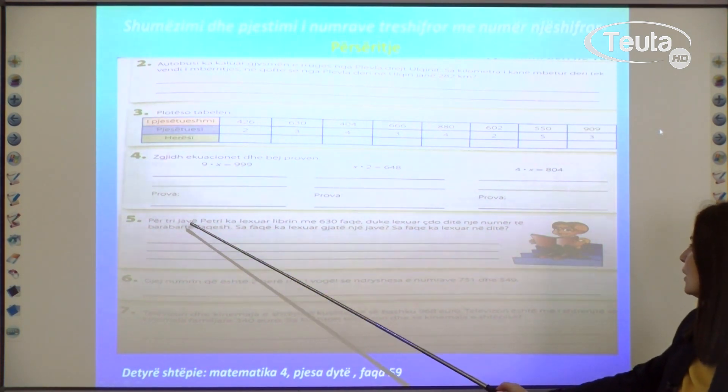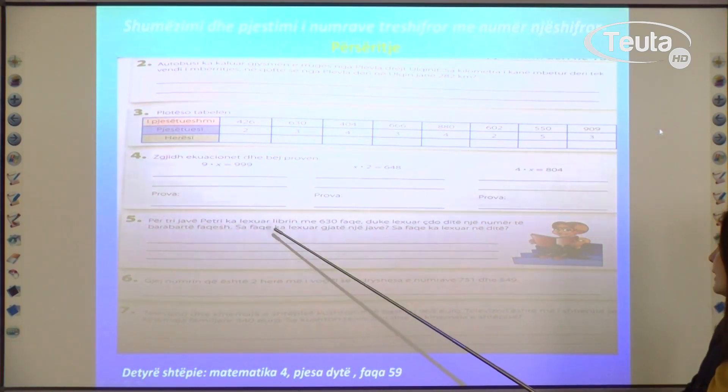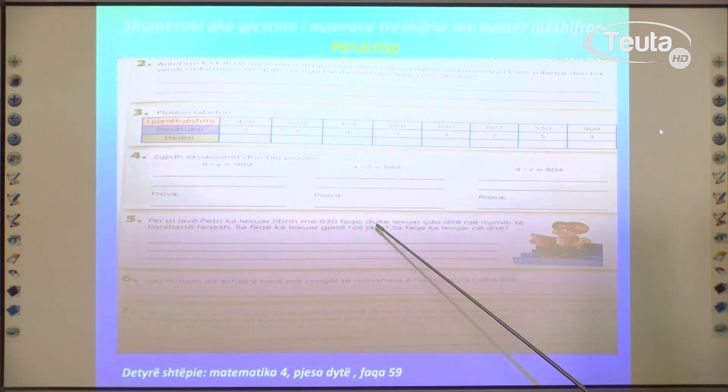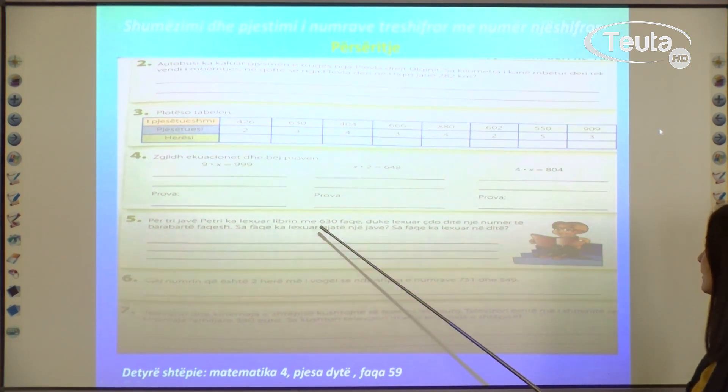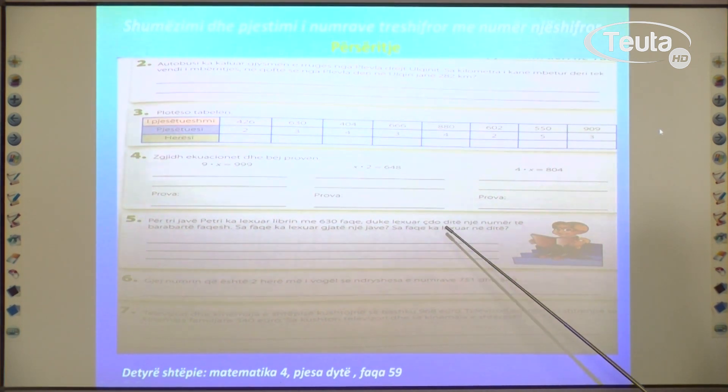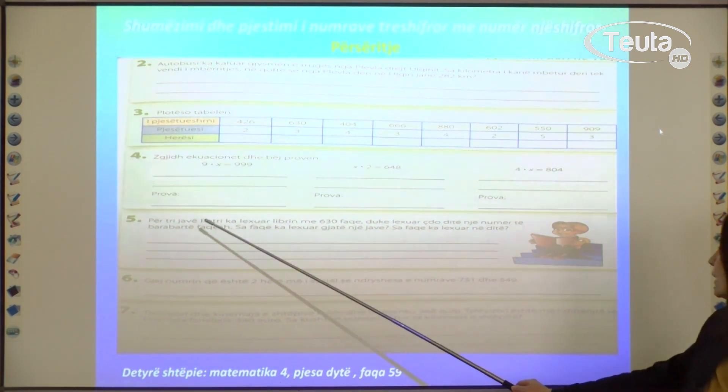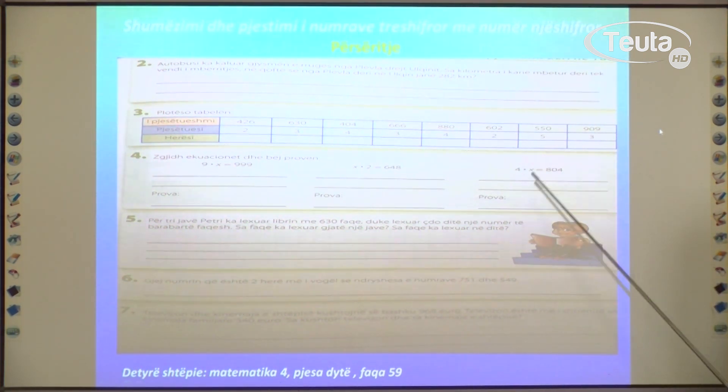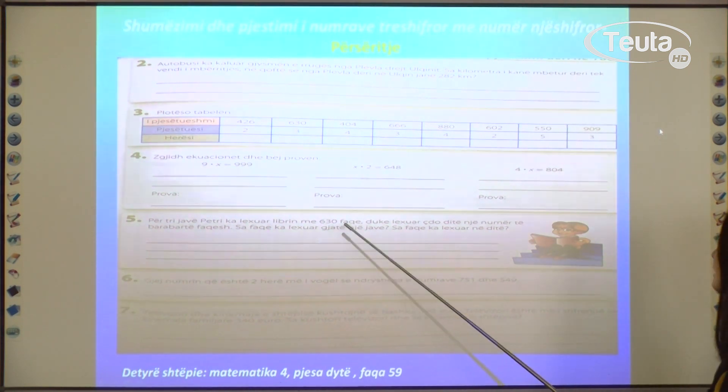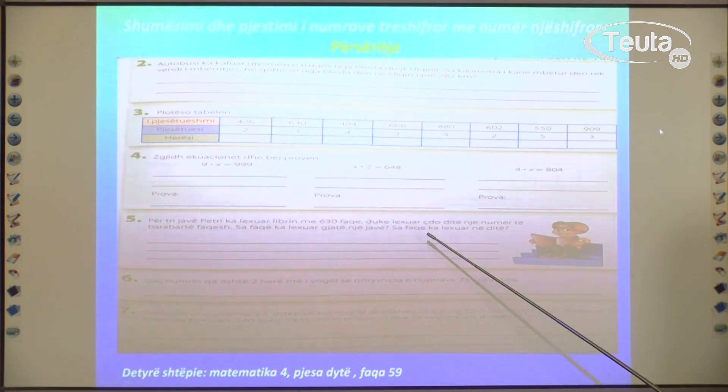What does exercise 5 say? For three weeks, Petri read a book with 630 pages, reading each day an equal number of pages. How many pages did he read during one week? How many pages did he read per day? Based on the total number of pages 630 and the three weeks given, you divide and you'll find how many pages he read during one week, and after that you'll find how many pages he read per day.